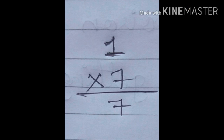Number 1: 1 multiply 7. So for this, we have to recite the table of 1. Are you ready students to recite the table of 1? Yes. Very good, so let's start. 1 one is 1, 1 two's are 2, 1 three's are 3, 1 four's are 4, 1 five's are 5, 1 six's are 6, 1 seven's are 7. So here you can see 1 multiply 7, the answer is 7.